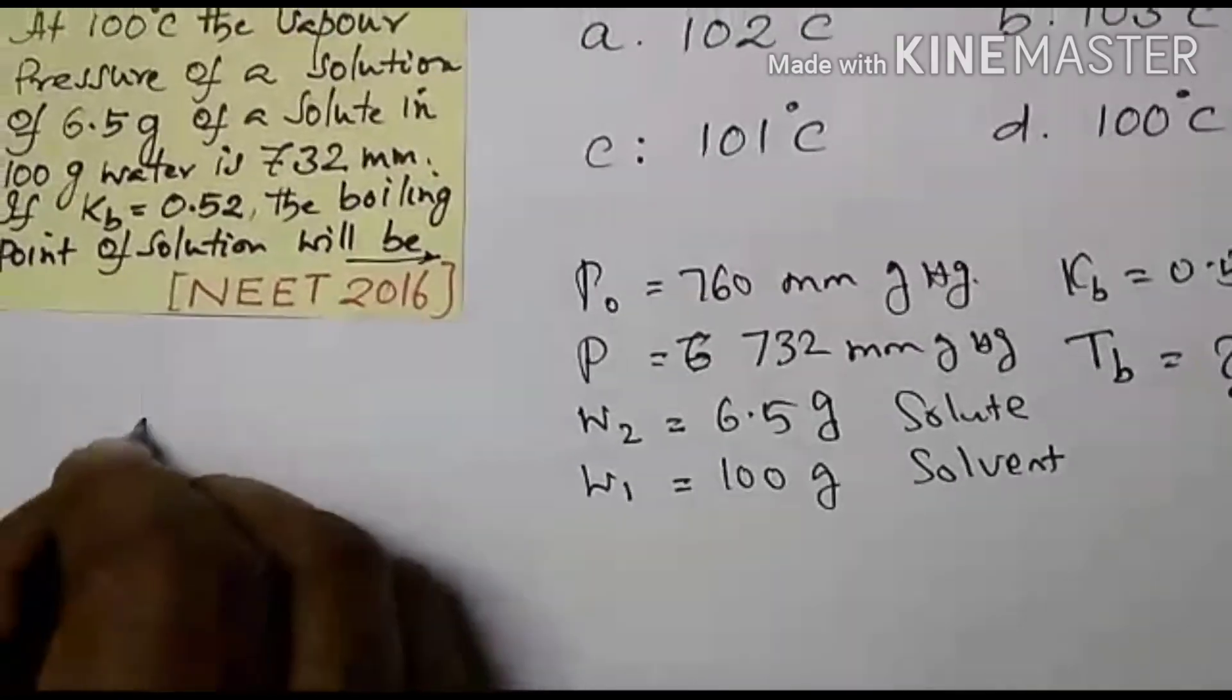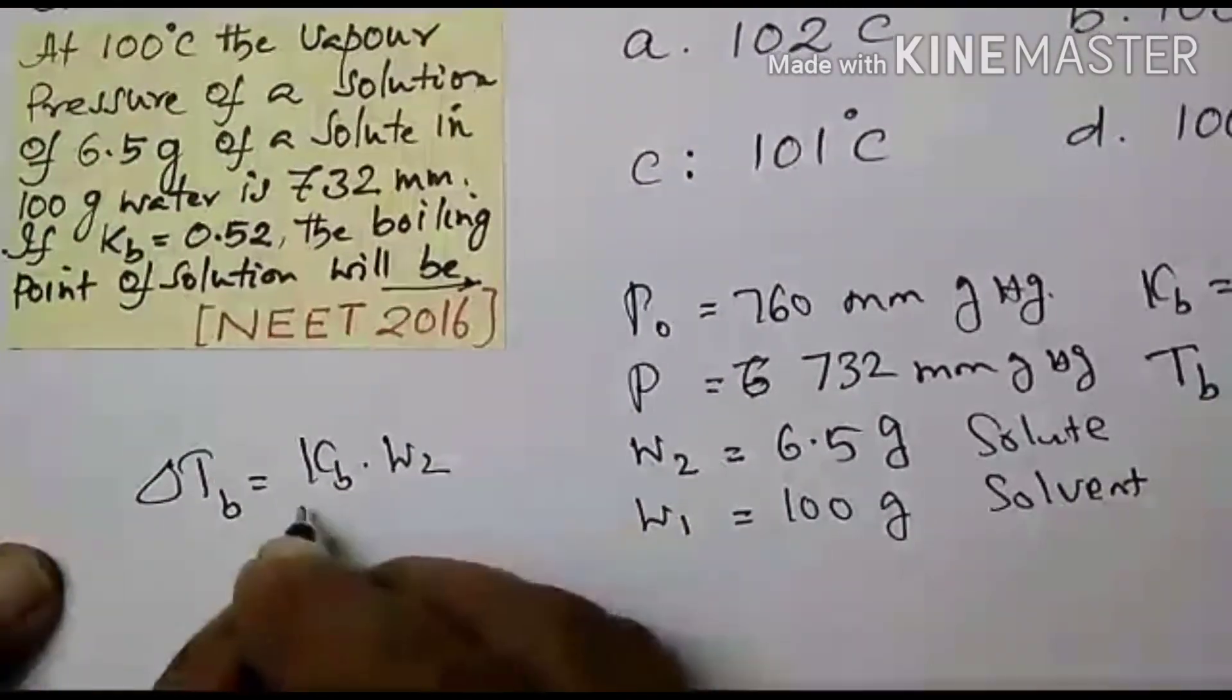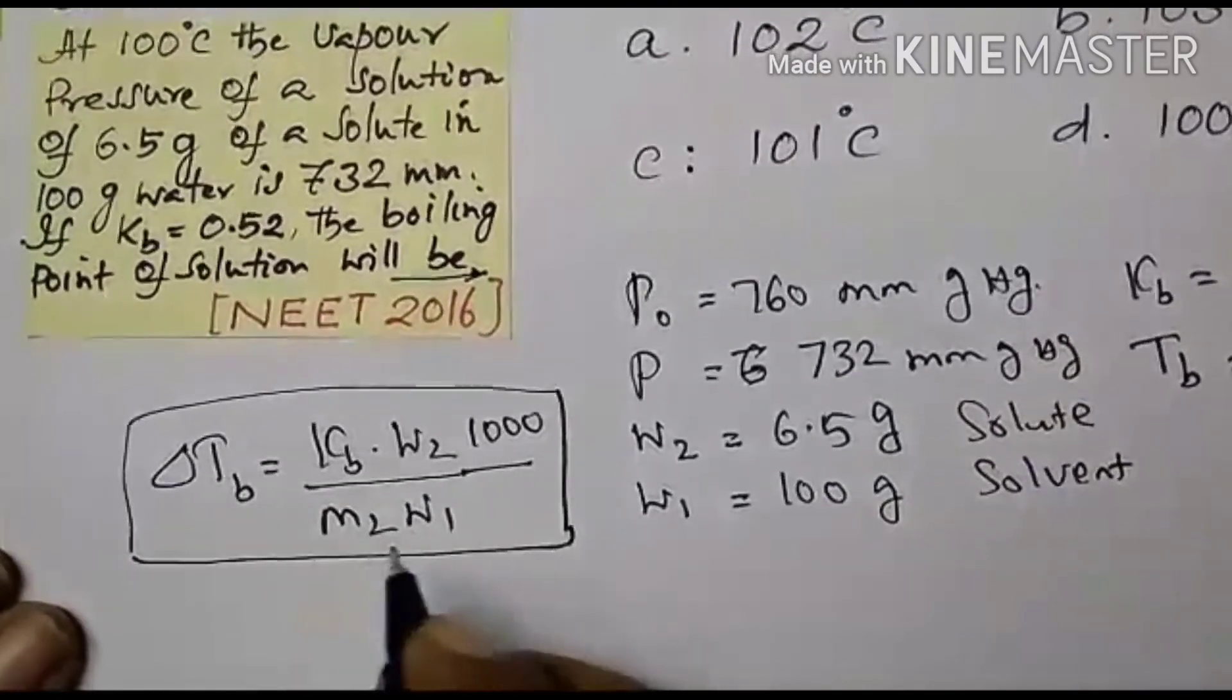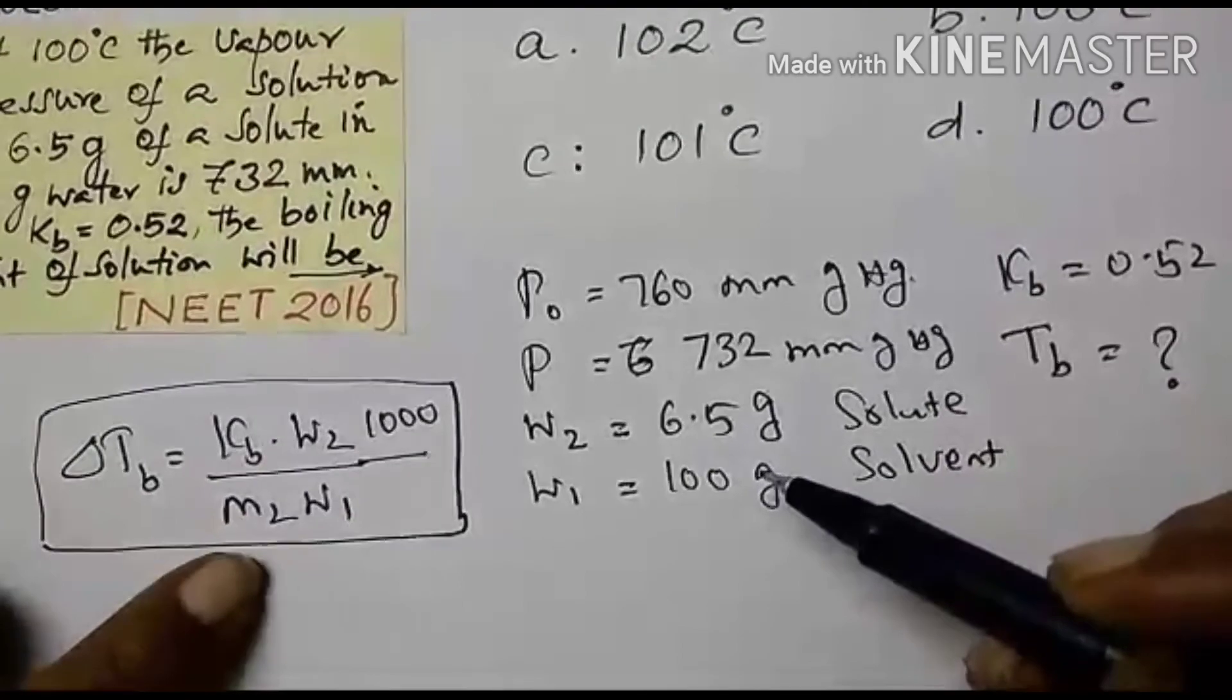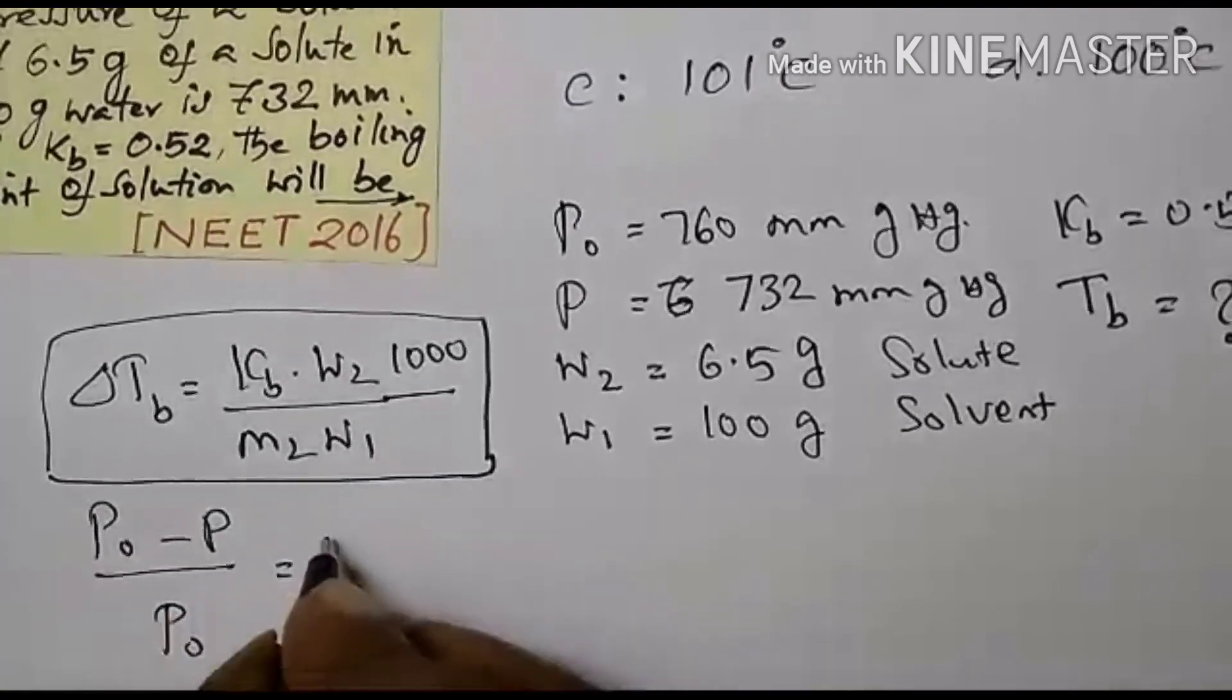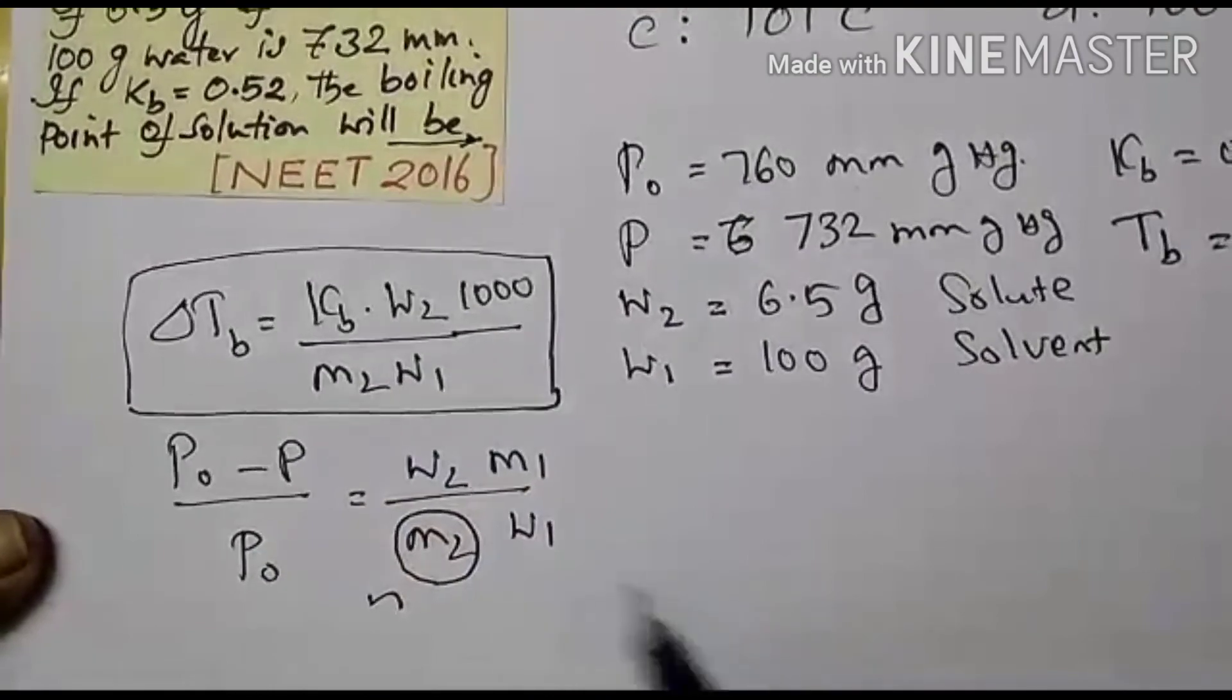I am writing the formula for Tb is delta Tb. That is change in temperature, change in boiling point of the temperature is equal to Kb into M. What is M is W2 by M2 W1 into 1000. So this is the formula for your elevation of boiling point. Now let us see. Here in this formula, everything is available. Kb is available, W2 is there, then W1. What is the thing we required is M2. So to get the M2, we can use the data which is P0 P. So now let us write the formula for M2.